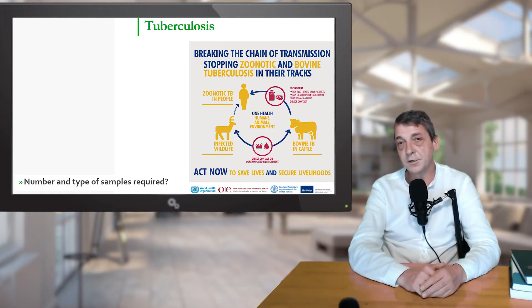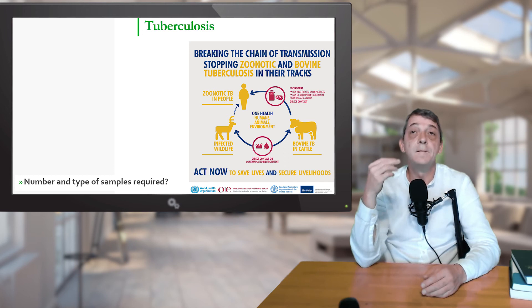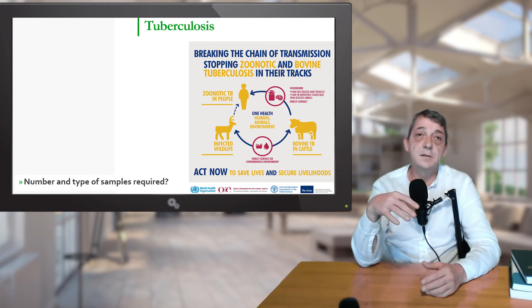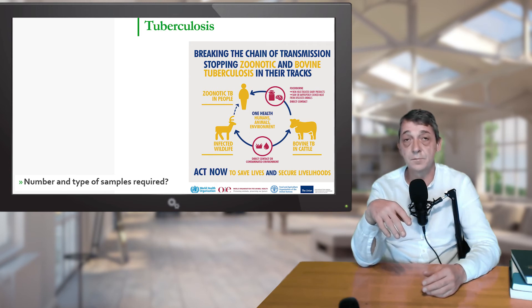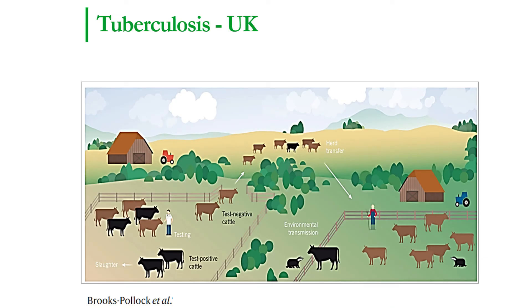The next question is: how is the number of samples determined and what types of samples are required? It's determined by the nature of disease and by the nature of control program that we are going to implement. For screening and monitoring we need fewer samples, but for surveillance and control measures we need a much larger number of samples.